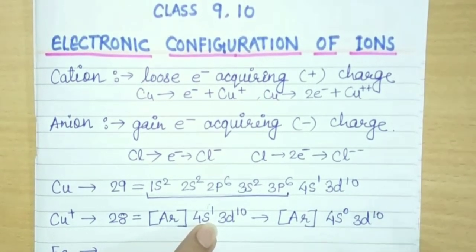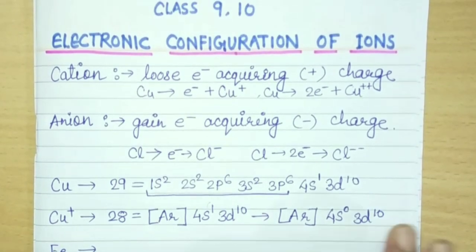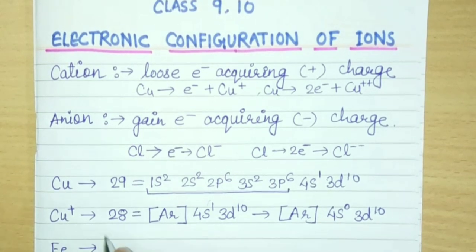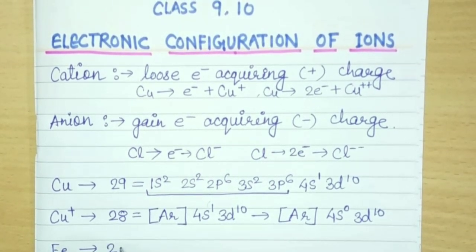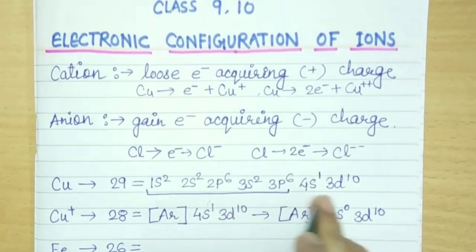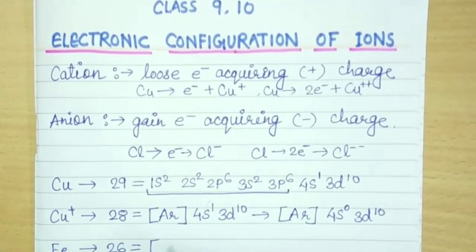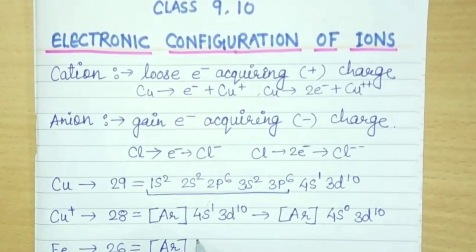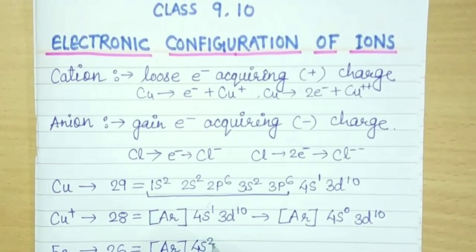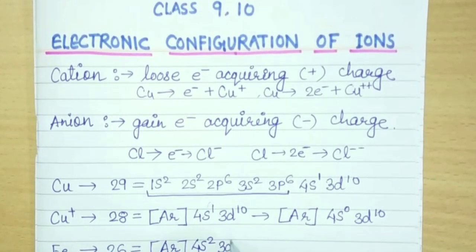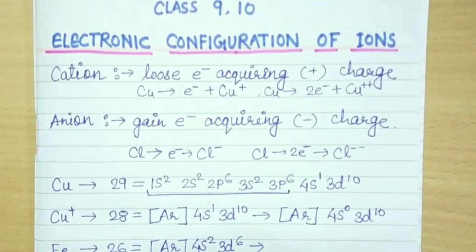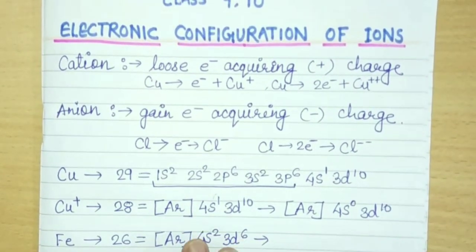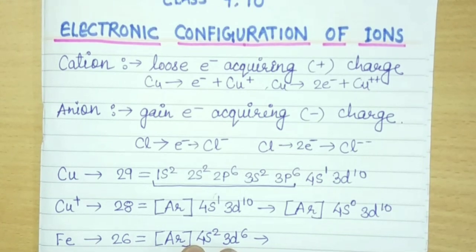So one electron from 4s1 will be removed. So its configuration will be 4s0 3d10. This is the correct configuration of copper ion. Now come to Fe. What is the electronic configuration of Fe? Atomic number 26. Again I will write Ar directly. Argon configuration, then 4s2 and 3d6. This is the electronic configuration of Fe.